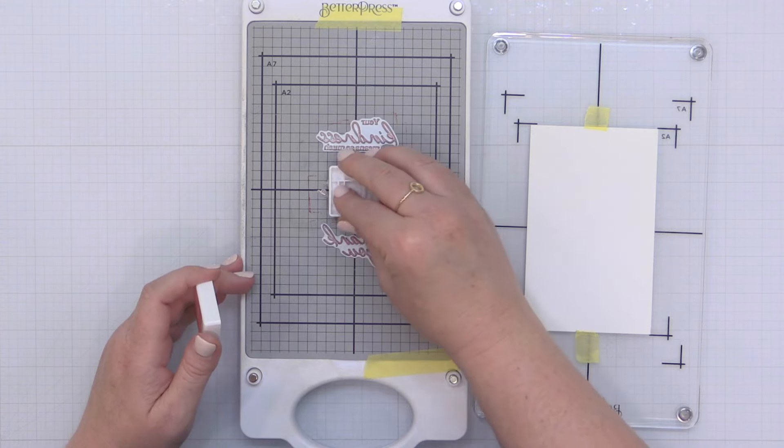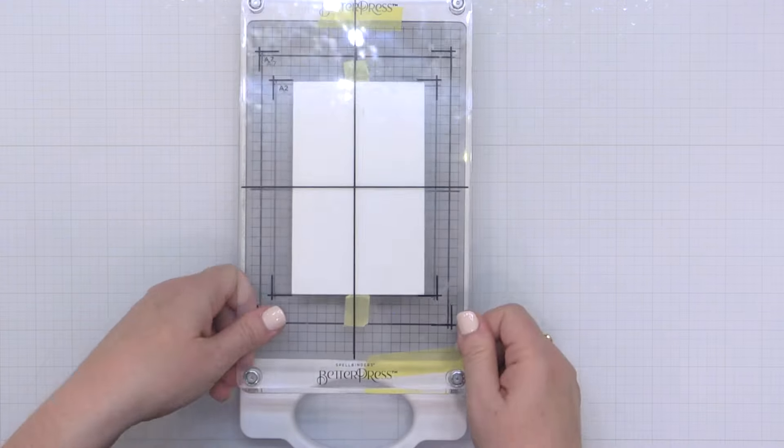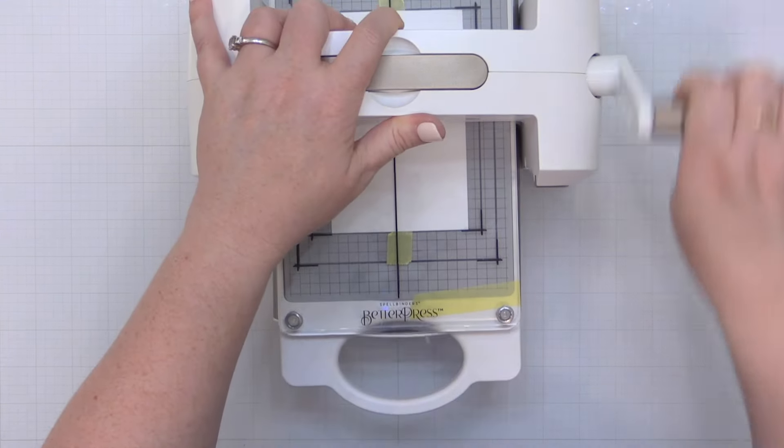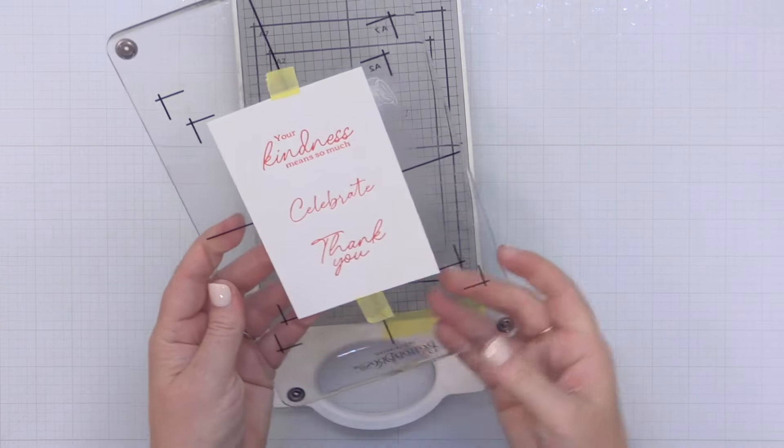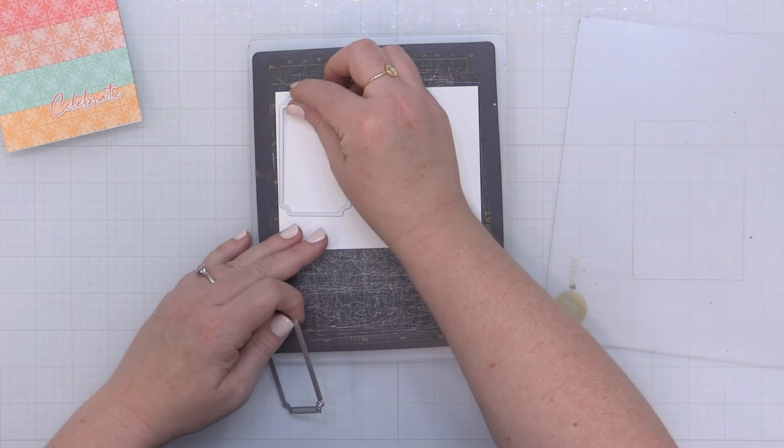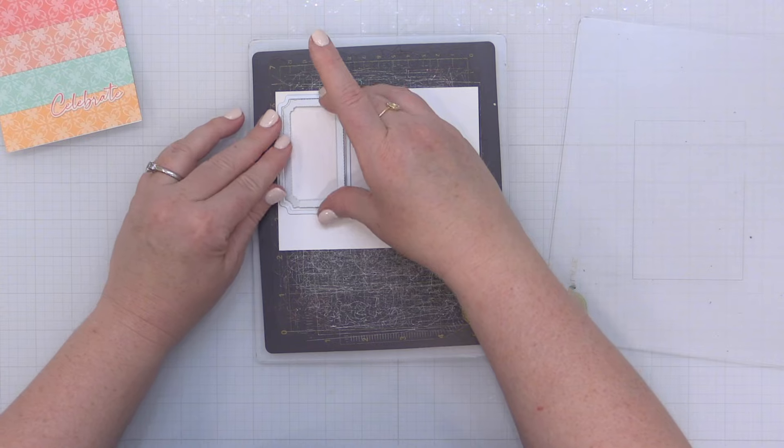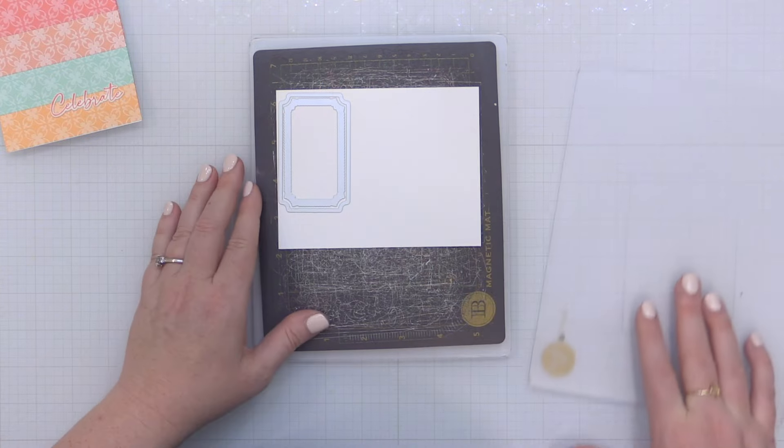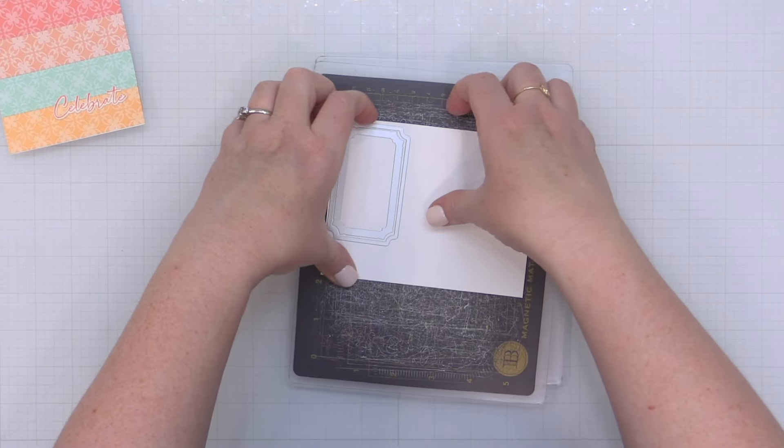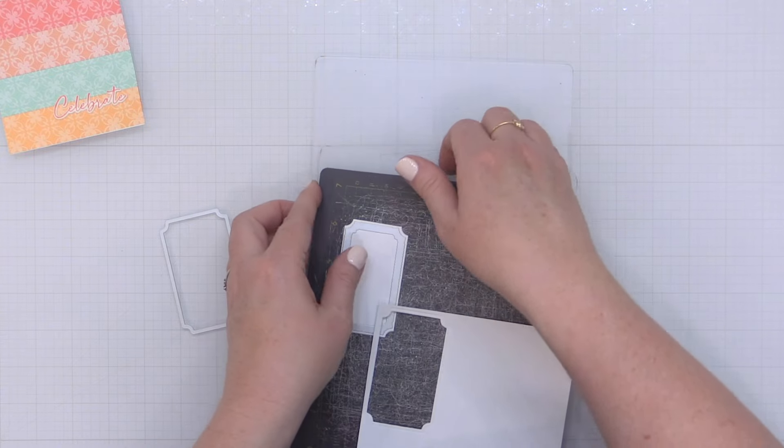And now I have a few press plate sentiments here on the magnetic mat of my chase. I'm inking them up in some Pink Fresh Studio dye ink in Passion Fruit and I'm pressing those onto some porcelain Better Press cardstock and then I will use the coordinating dies to die cut all of these sentiments. Now I have to say that most inks that I have tried with my press plates seem to work really well so don't be afraid to try the inks that you may have in your stash to create different colors or different looks with your pressed backgrounds.